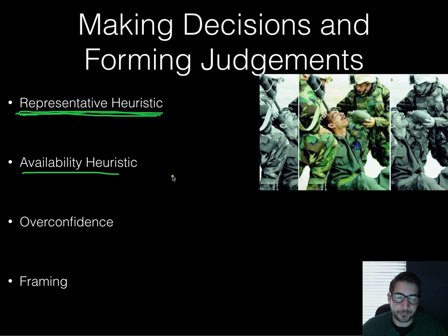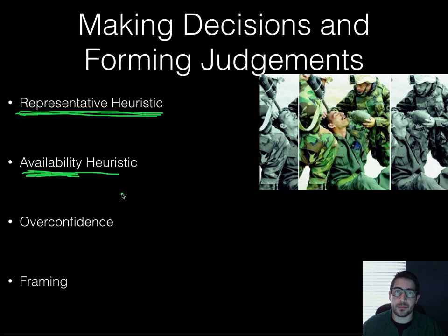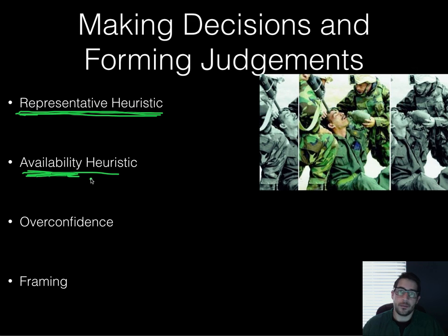Additionally, there's the availability heuristic. The availability heuristic is when we take shortcuts based on information we have available to us. For example, when people who don't have much contact with people from the Middle East see that some Middle Eastern individuals carried out terrorist attacks on the Twin Towers, they may tend to look at anyone from the Middle East as a potential terrorist. Even though there are millions and millions of people from the Middle East who are not terrorists, that's the only reference available to them. So that's the availability heuristic — you only compare against what you know.